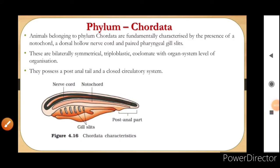We are going to start with Phylum Chordata. Animals belonging to Phylum Chordata are fundamentally characterized by the presence of a notochord, a dorsal hollow nerve chord, and paired pharyngeal gill slits. These are bilaterally symmetrical, triploblastic, coelomate animals with organ system level of organization. They possess a post-anal tail and a closed circulatory system.